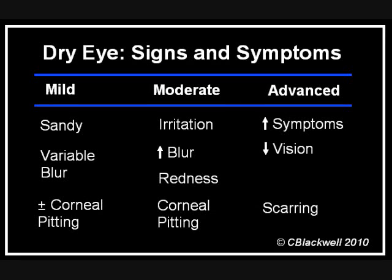If the tear film on the surface of the cornea is not in good shape, that causes a range of problems varying from mild to severe. At a mild level, your eyes feel sandy, maybe worse in dry conditions like in the wind or working on a computer, and vision may be intermittently blurred. At a moderate level, the cells on the surface of the cornea start to suffer damage, causing more irritation and worse vision, and importantly an onset of inflammation. At a more advanced level, there is more discomfort, more inflammation, and scarring of the cornea.